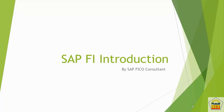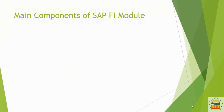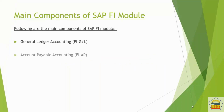SAP FICO is a combination of two modules. FI is for Finance and CO is for Controlling. Under Finance, we have main components: General Ledger Accounting, Accounts Payable Accounting, Accounts Receivable Accounting, and Asset Accounting.